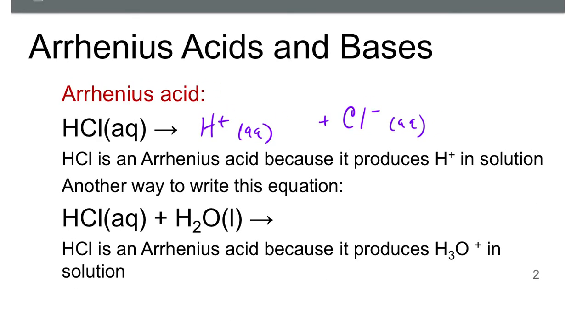So Arrhenius' definition basically says that an acid produces H+. And I'm showing two different ways to write this equilibrium. Actually, this is not an equilibrium. I take that back. This is not an equilibrium because this is a strong acid. So it completely dissociates. HCl completely breaks apart to H+ and Cl-. So the single reaction arrow towards the products is correct.